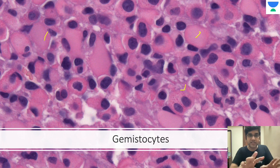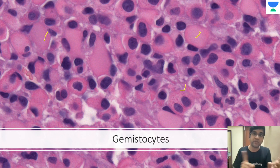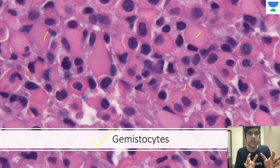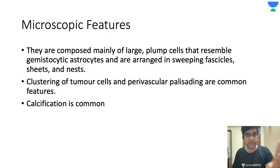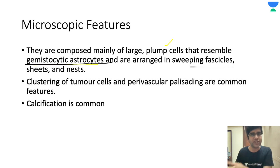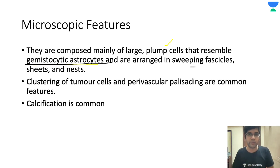At higher power, SEGA will be more oval, not elongated. To differentiate from gemistocytic astrocytoma — to call it gemistocytic astrocytoma, I should have an astrocytic background with more than 20% gemistocytes. That's all. The cells in SEGA are large plump cells which resemble gemistocytic astrocytes, but they are not gemistocytic astrocytes. The most important thing is they are in sweeping fascicles, sheets and nests of cells, divided by a tiny thin septa — very, very classical.